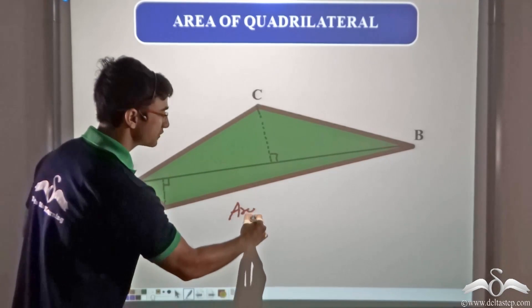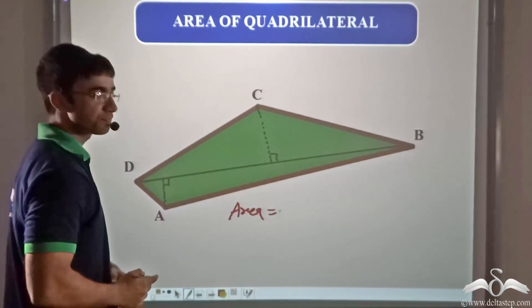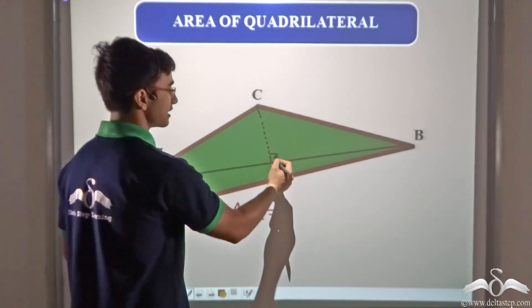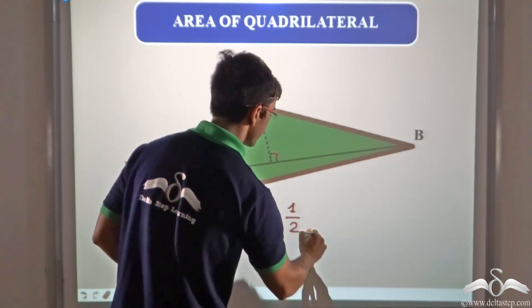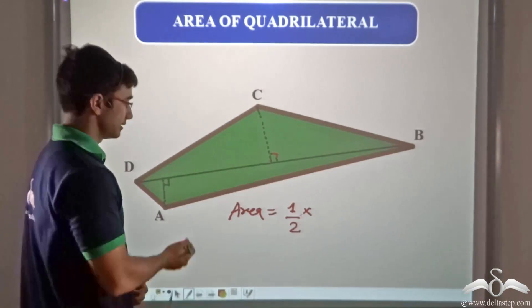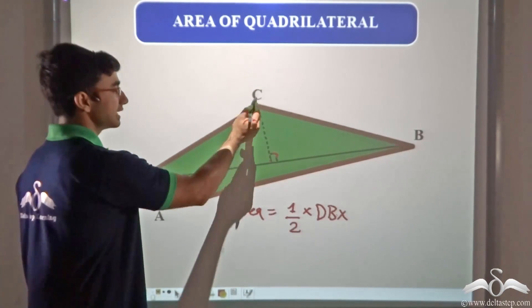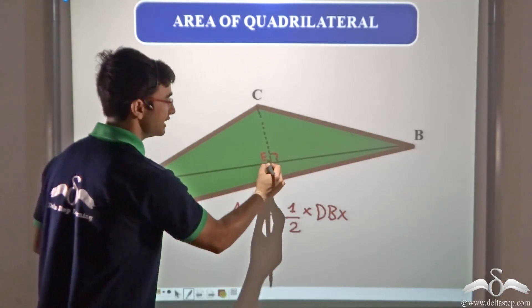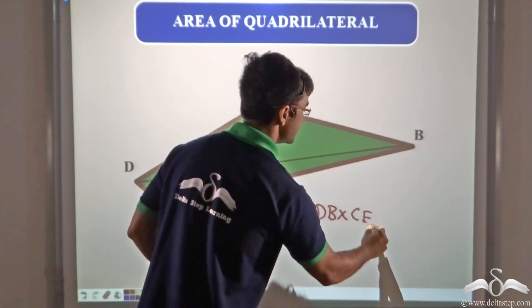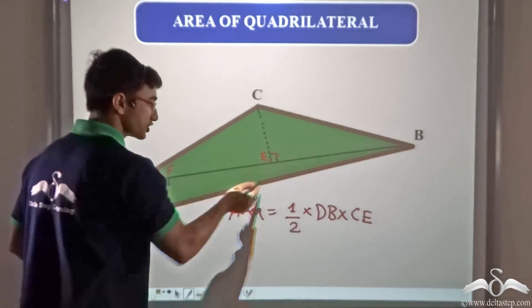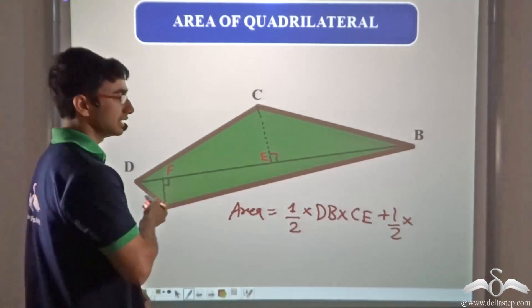How? The area of the quadrilateral in this case will be given by the sum of these two triangles. As you can see, there is a right angle present in this triangle. So the area of this triangle will be half into base, that is DB, into height, that is this particular length. Let's call this E and let's call this F. So into CE plus the area of this triangle, that will be half into base, that is again DB, into AF.